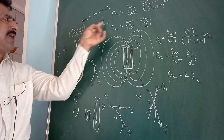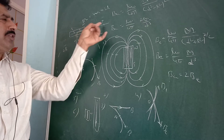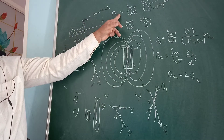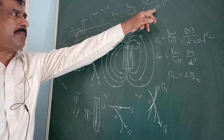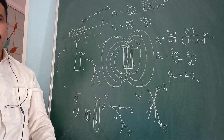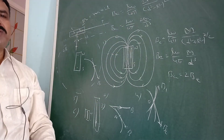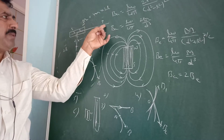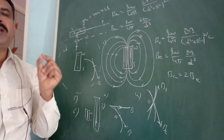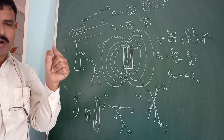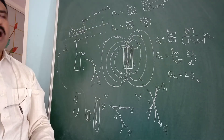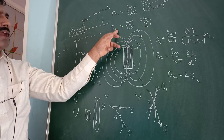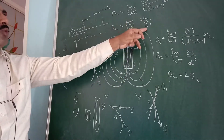Along the axial line of the magnet, at distance D from the midpoint O, the magnetic field is given by: B_A = (μ₀/4π) × 2M / (D² − L²)². The value of μ₀/4π is 10⁻⁷. For a short magnet, where D is much larger than L, L² is neglected, giving the simplified formula: B_A = (μ₀/4π) × 2M / D³.